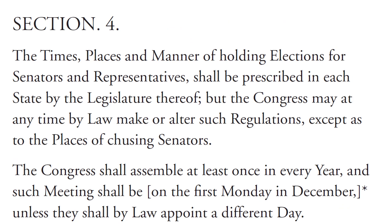Section 4. The times, places, and manner of holding elections for Senators and Representatives shall be prescribed in each state by the legislature thereof, but the Congress may at any time, by law, make or alter such regulations, except as to the places of choosing Senators. The Congress shall assemble at least once in every year, and such meeting shall be on the first Monday in December, unless they shall, by law, appoint a different day.